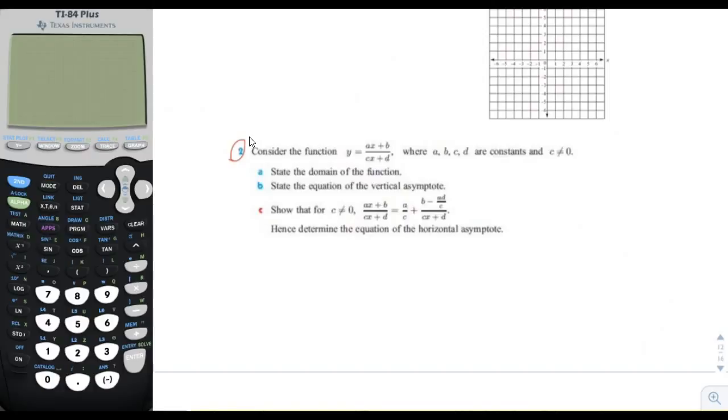Remember, the way you find a vertical asymptote is you see when the denominator is going to be equal to 0. So let's just solve for the value of x that makes this 0. We'll have x equals negative d over c. So this is the horizontal asymptote equation, and then the domain is going to be equal to everything except for negative d over c.